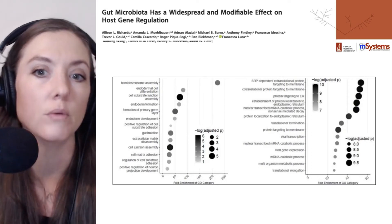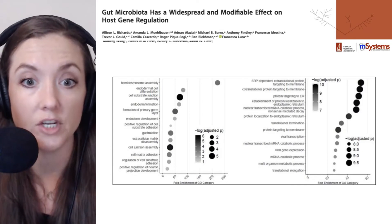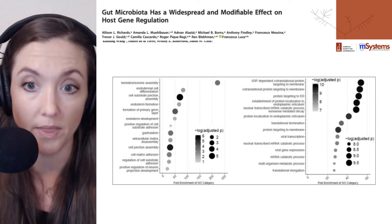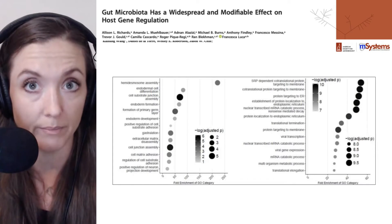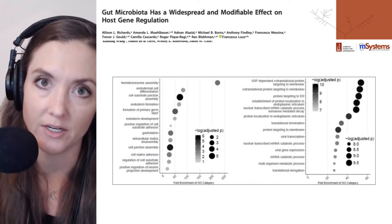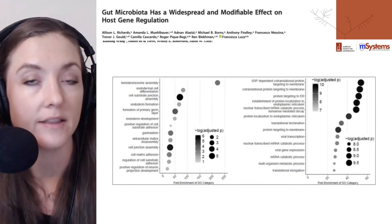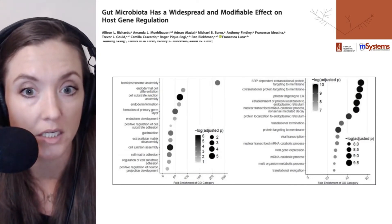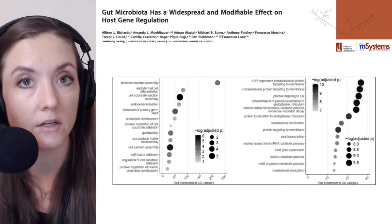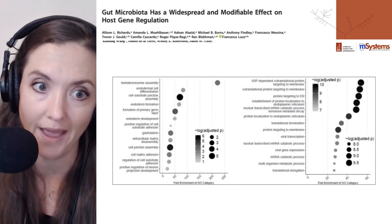The authors went on to manipulate the microbial consortia and demonstrate that gene expression can be regulated in predictable ways when the microbial community has a known composition. They also began to look at how these genetic changes were being made, and their data suggests this is due to epigenetic changes — specifically, that microbial composition can affect chromatin assembly and binding of specific transcription factors.